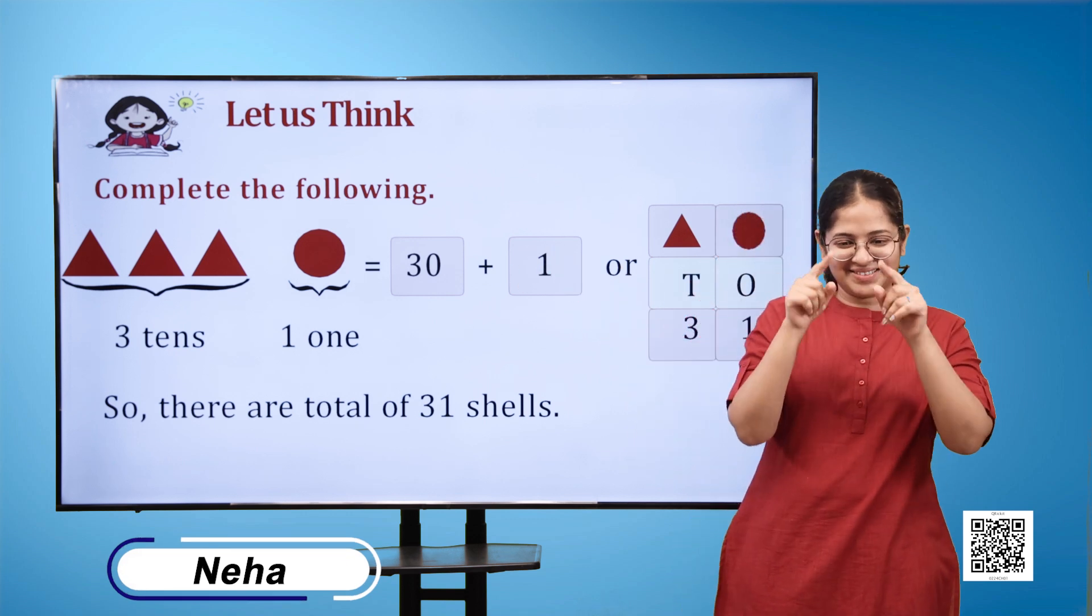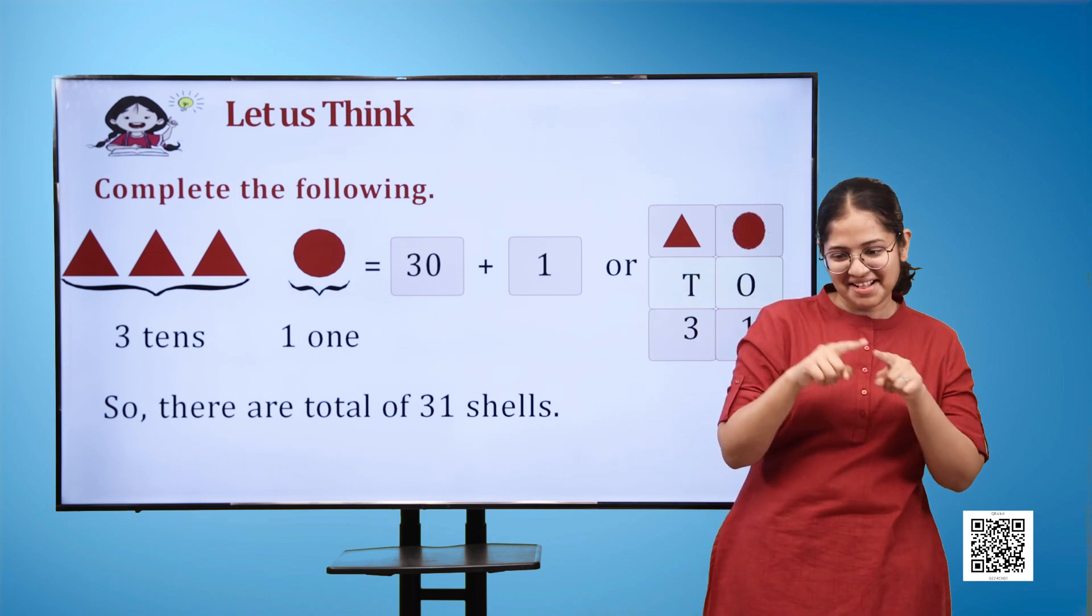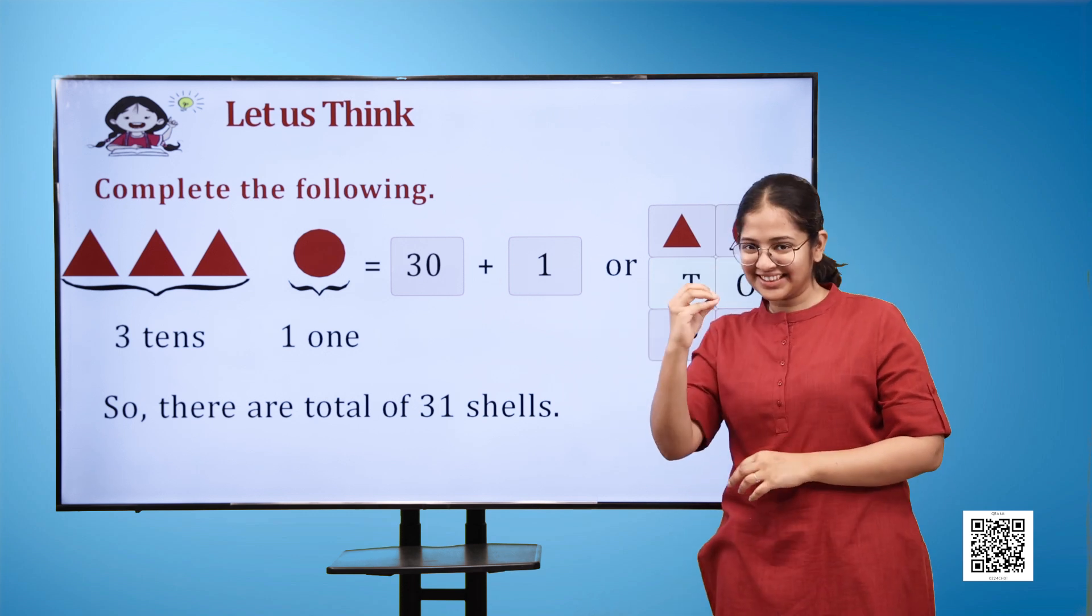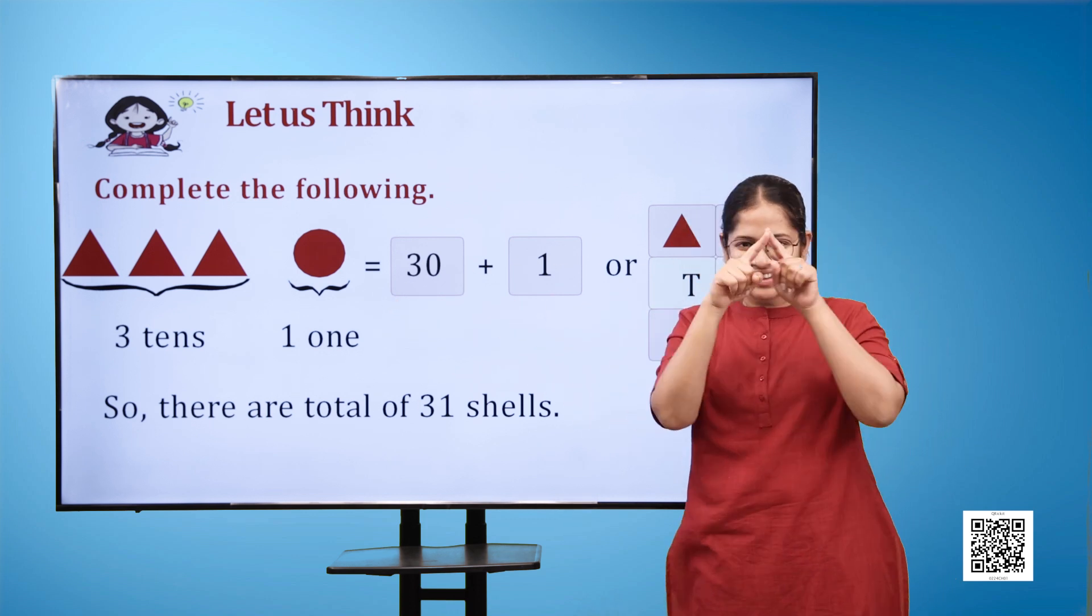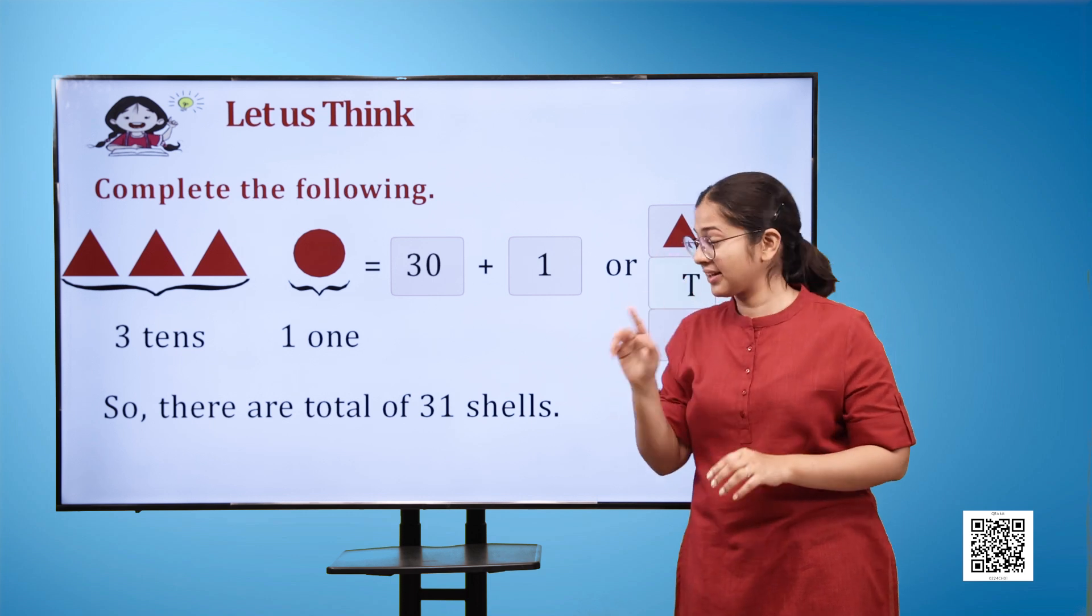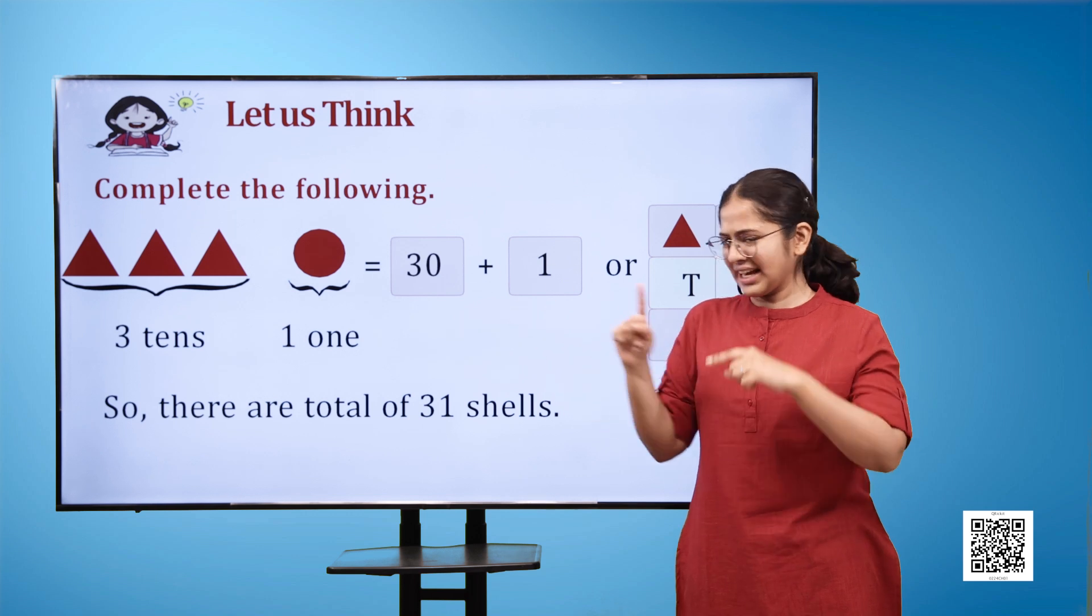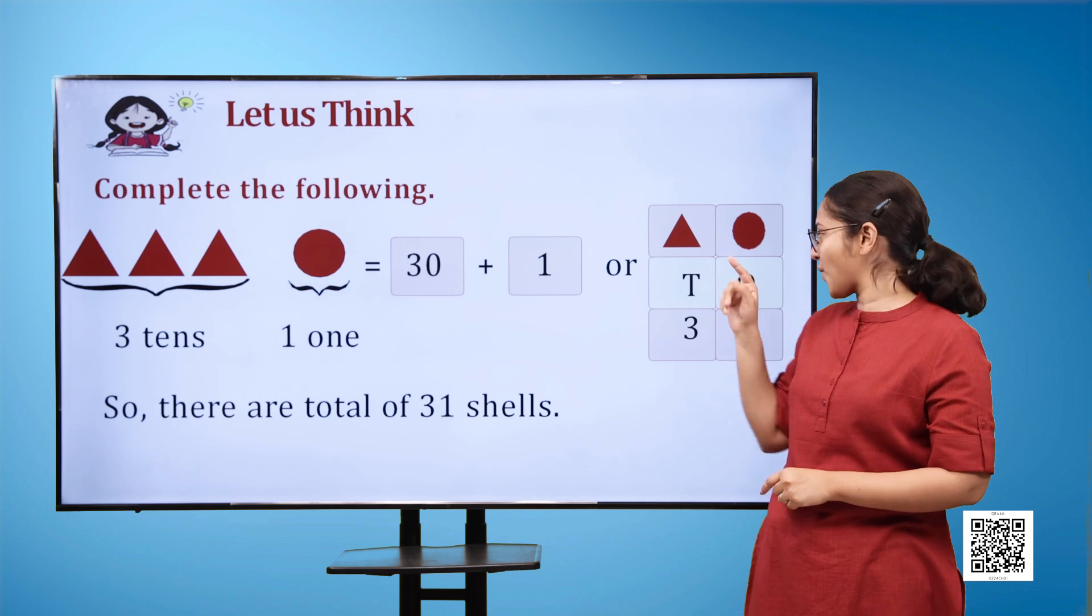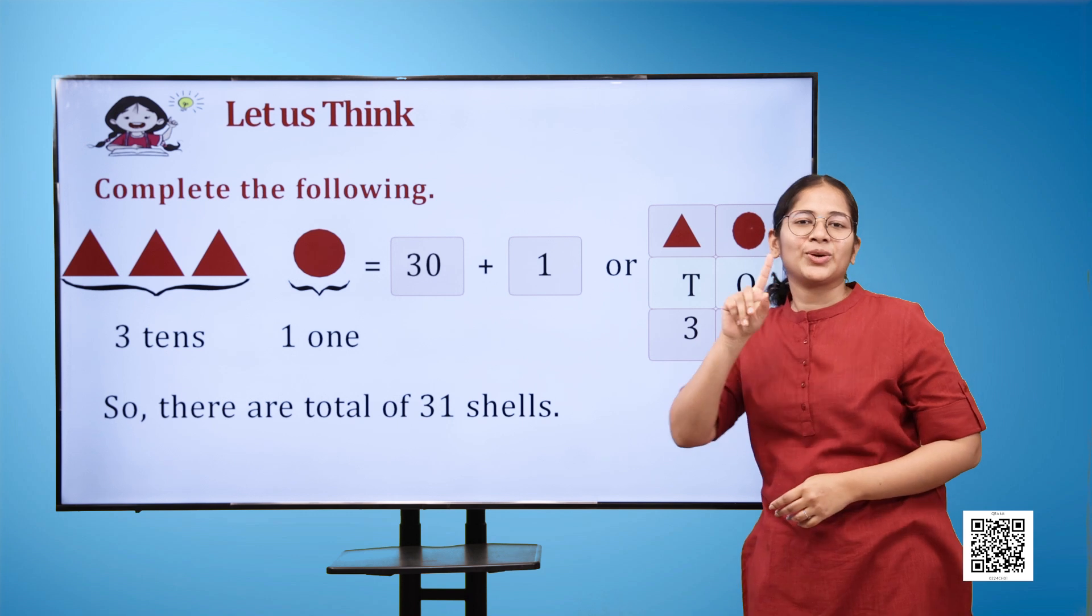Complete the following: there are three brown triangles signifying three tens and one brown circle signifying one one, which is equal to 30 plus 1, or triangle T that is equal to 3 and circle O which is equal to 1. So there are a total of 31 shells.